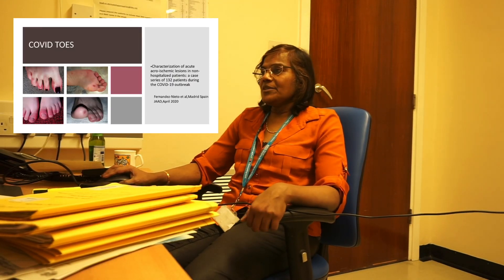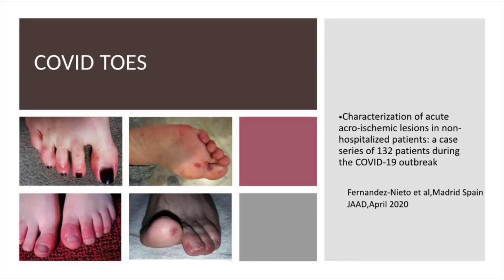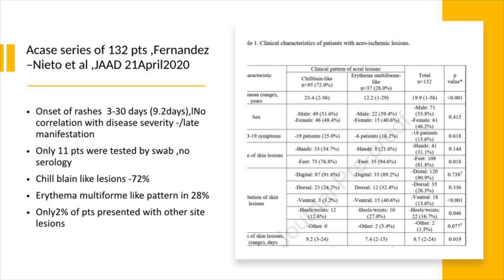Coming to the manifestations in the toes, there are particular discrete manifestations we see called COVID toes. This has been reported widely recently when dermatologists started seeing a lot of young patients for problems in their toes. This was reported from a series of 132 patients during the COVID outbreak, of whom 20% were found to have rashes associated with COVID. These patients either had COVID symptoms or contact with COVID patients, and only 11 of them were confirmed by swabs.